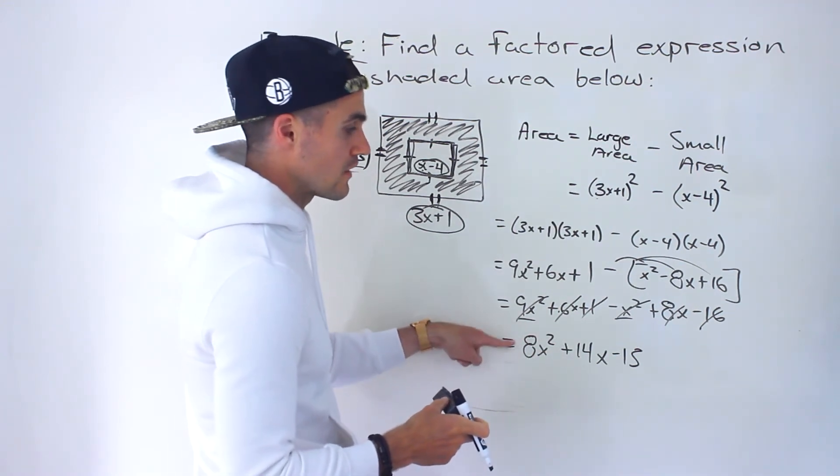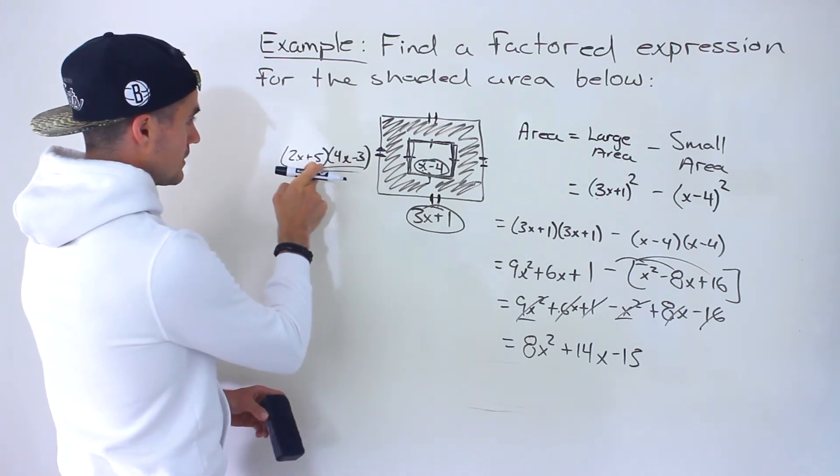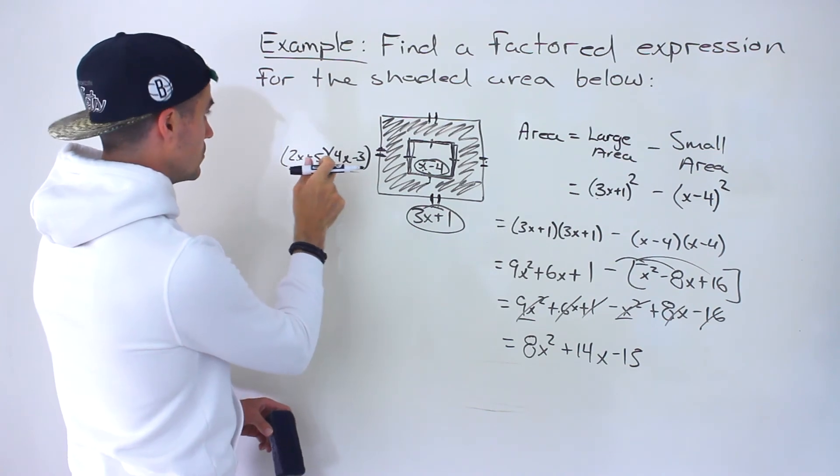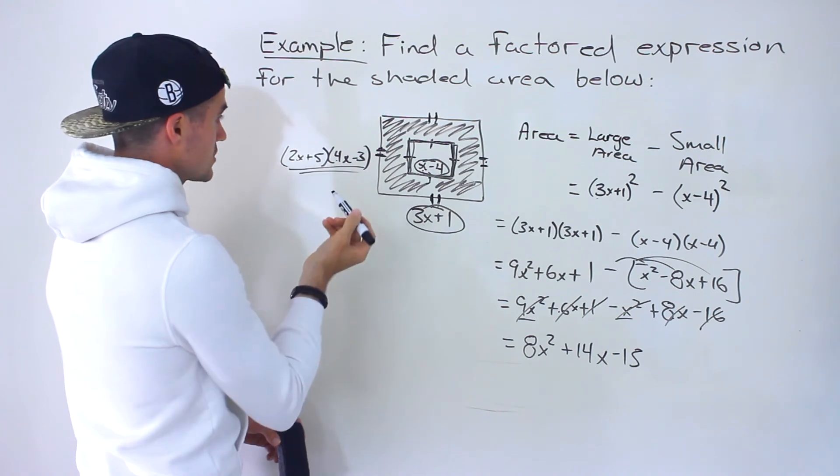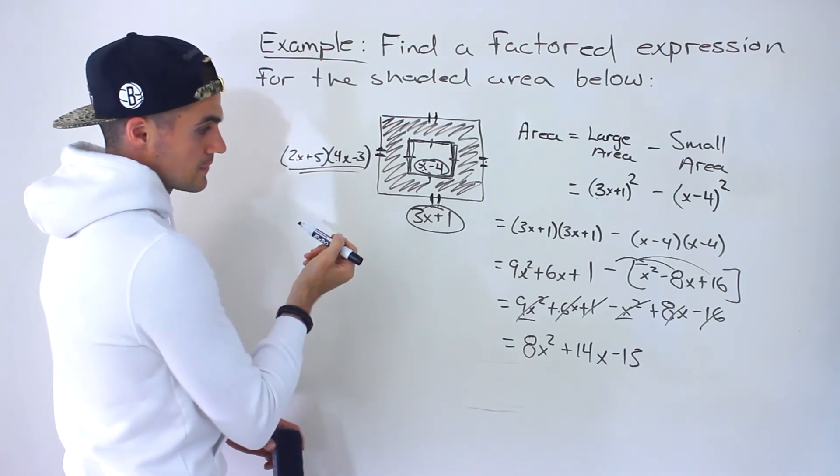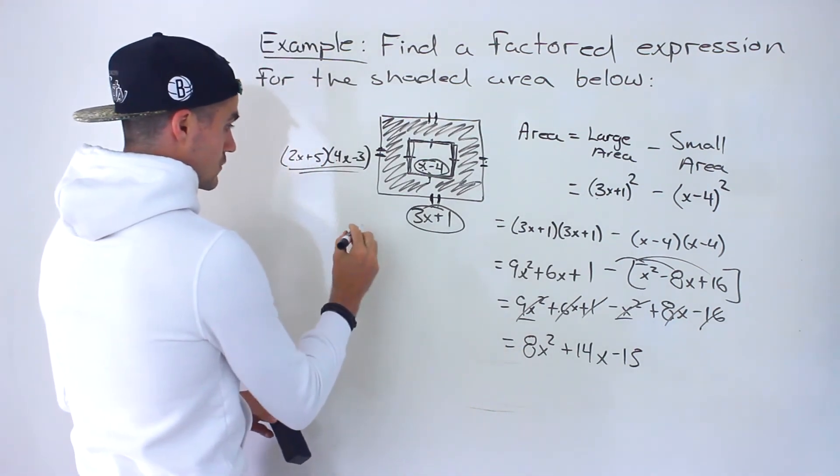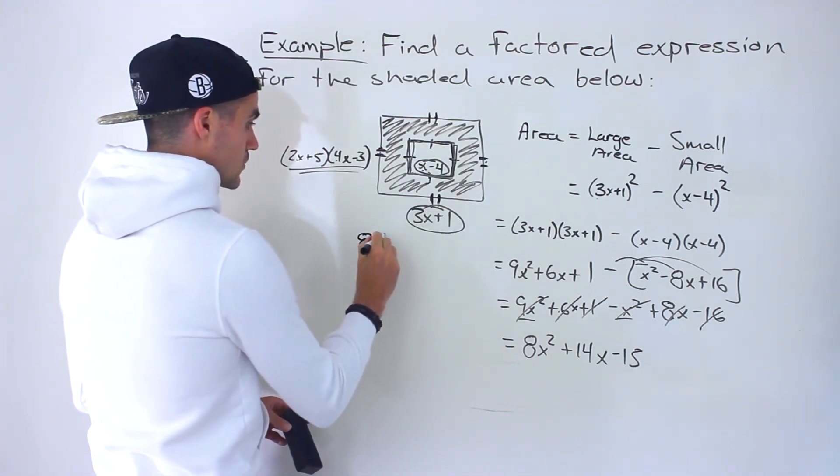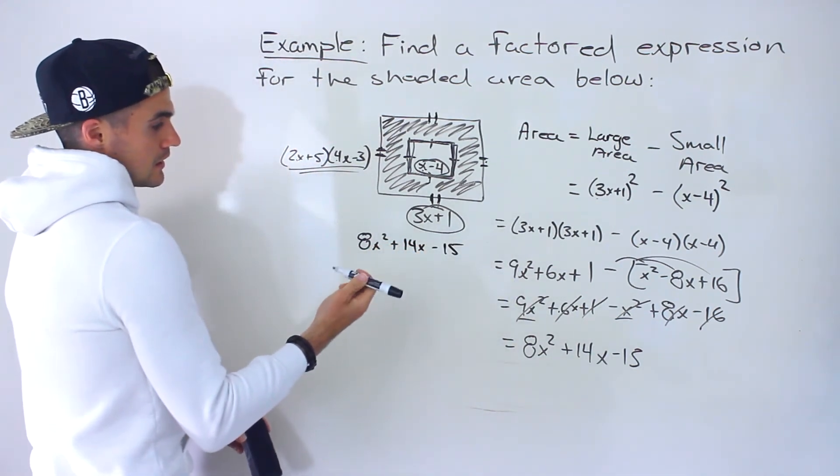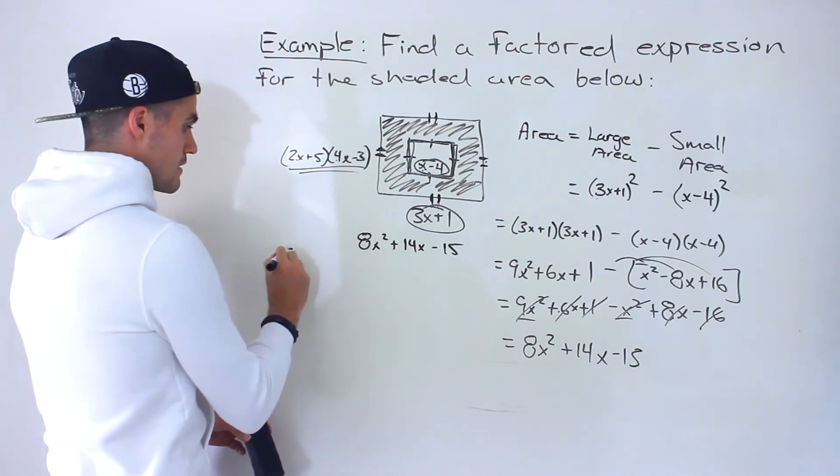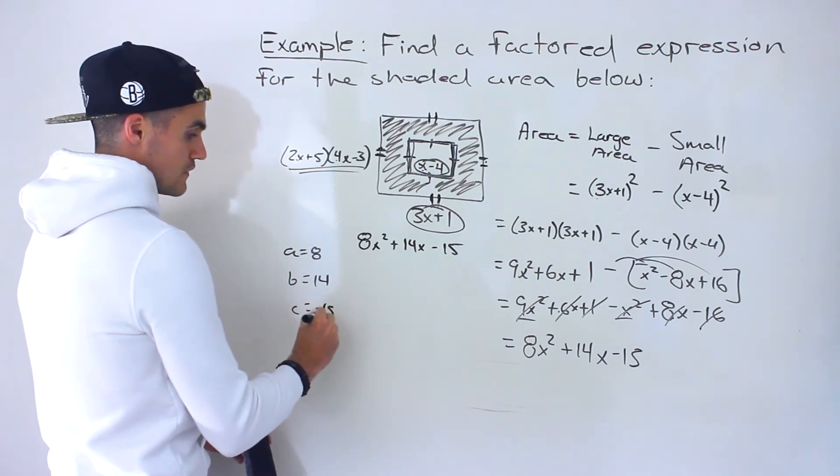Then you've got to factor this. And hopefully this will factor into that. So we've got to factor 8x² + 14x - 15. Can't take anything out of here. The a value is 8, the b value is 14, the c value is negative 15. So then the ac value would be 8 times negative 15, which would give us negative 120.